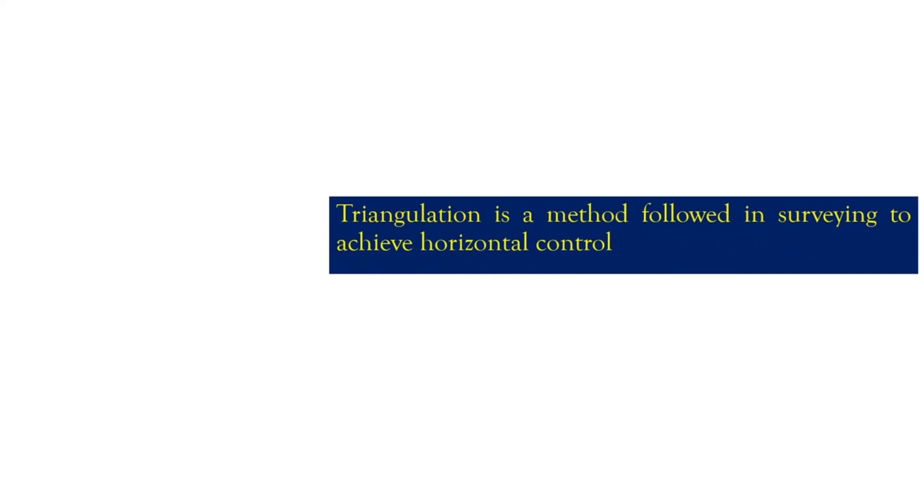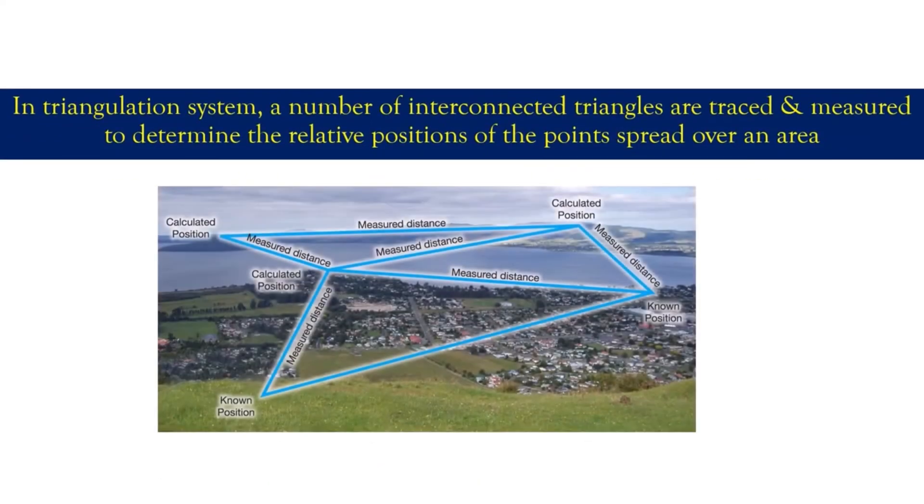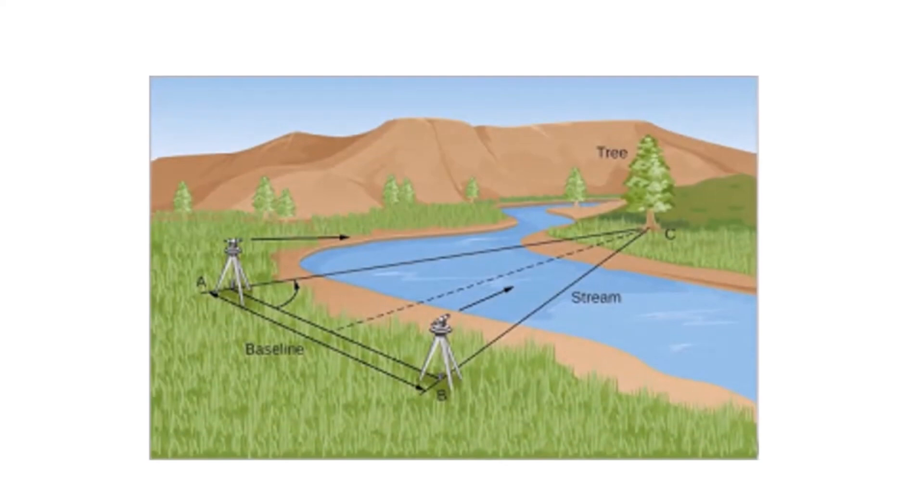Triangulation is a technique followed in surveying to achieve horizontal control. In a triangulation system, a number of interconnected triangles are traced and their angles are measured to determine the relative positions of the points spread over an area. In this system, the length of only one line is determined, called the baseline and the angles are measured using an instrument, and the length of all the sides is determined using trigonometric formula.